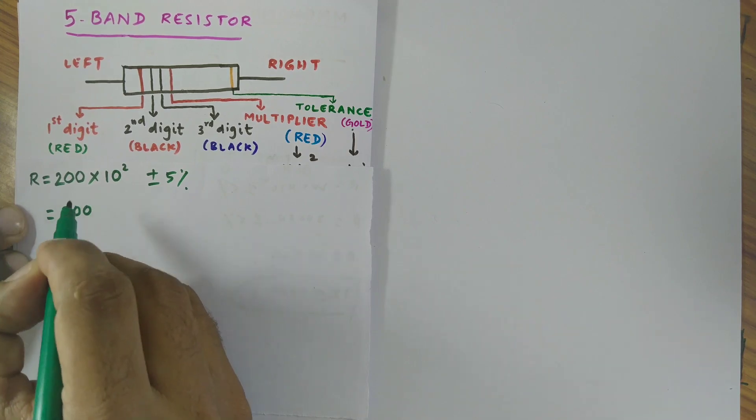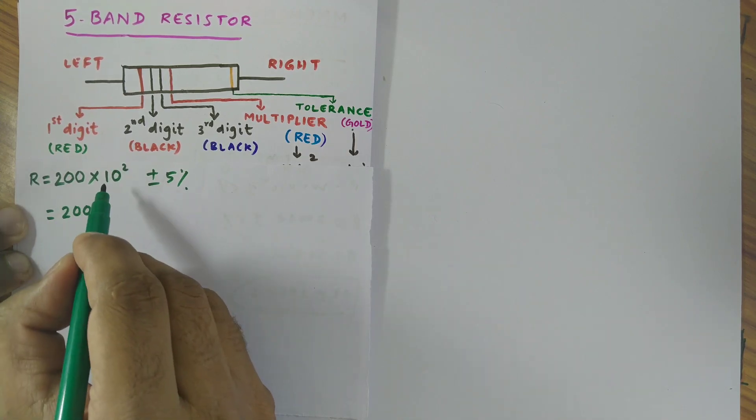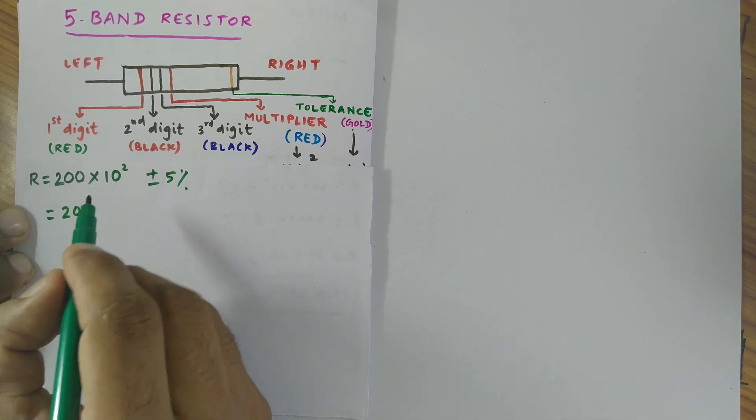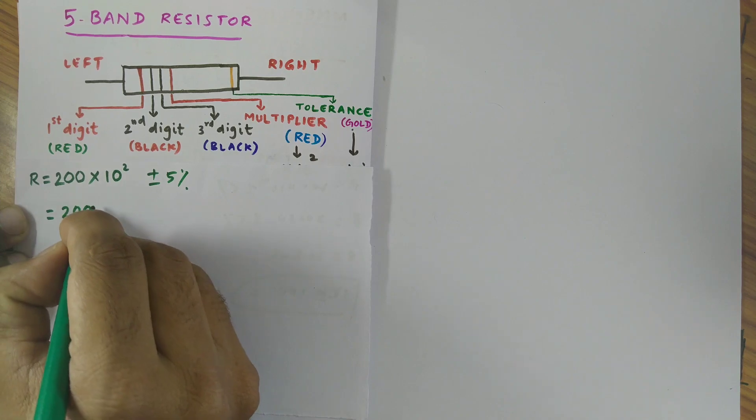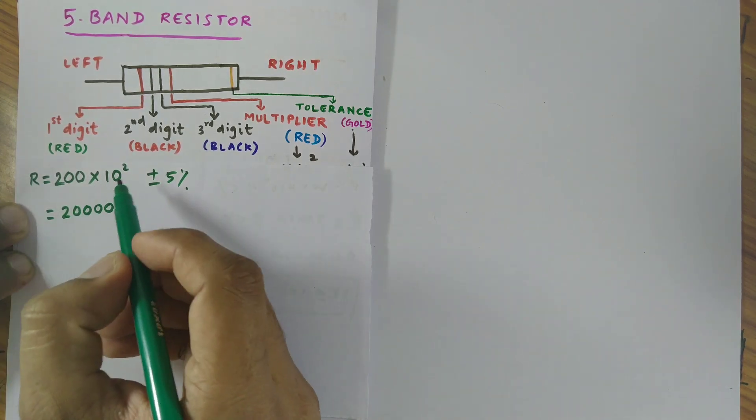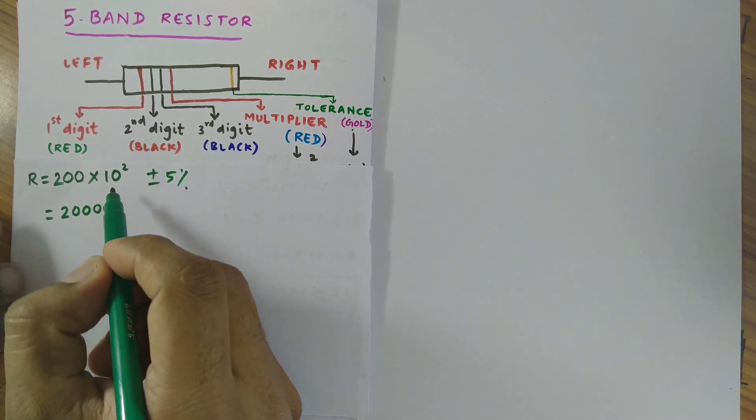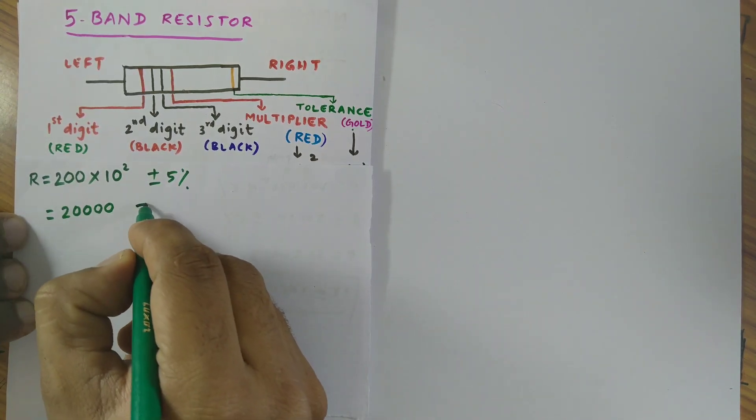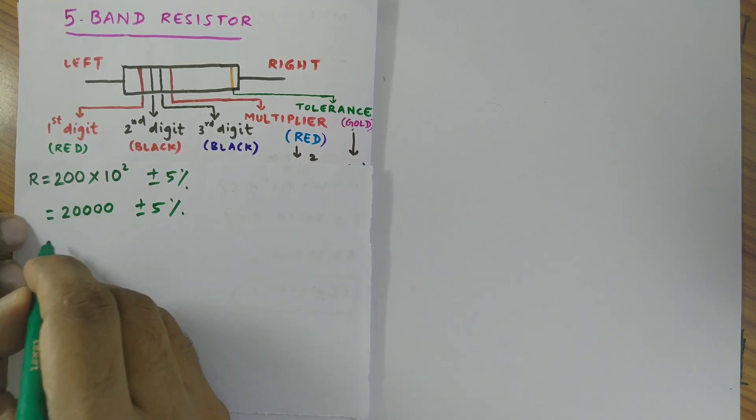There is a shortcut here. 10 power 2 means we need to multiply 10 with another 10. Instead of that I write 2 zeros. Why 2 zeros? Because I have 2 as the power of 10.